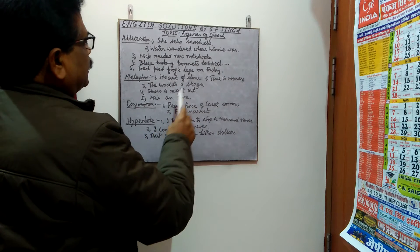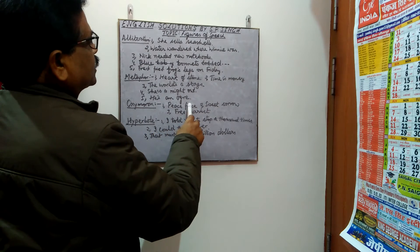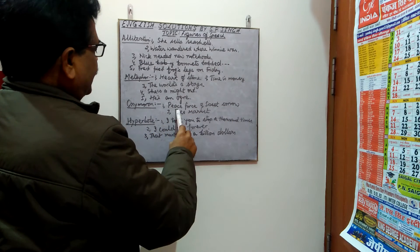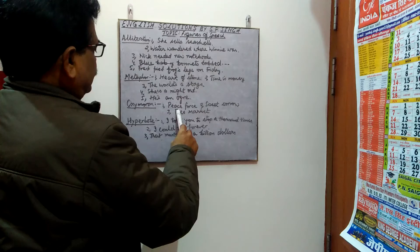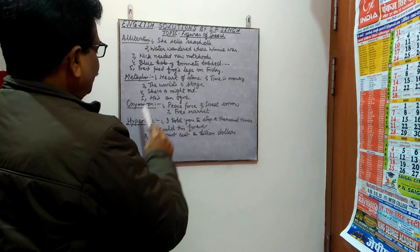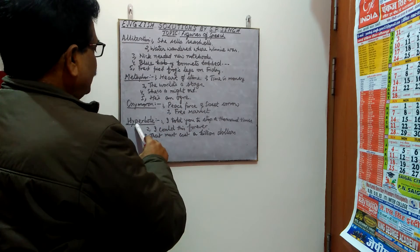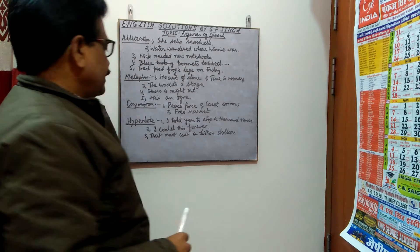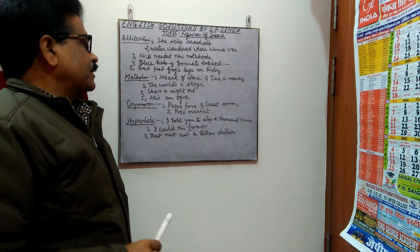The third figure of speech is oxymoron, in which opposites are put together. Examples are: 'Peace force,' 'Sweet sorrow,' and 'Free market.'